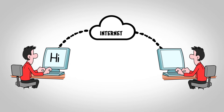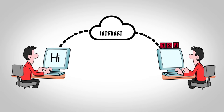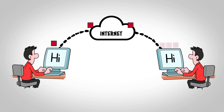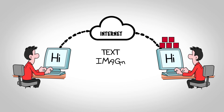If one person is sending a message to another person, then his message is divided into small units called packets, which are reassembled at the destination end system to display the correct message. Internet is only concerned with the delivery of packets of information. Conversion of packets into text, images, or videos is done by the applications stored on a computer.